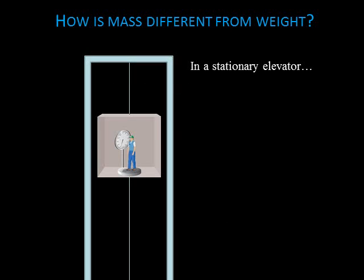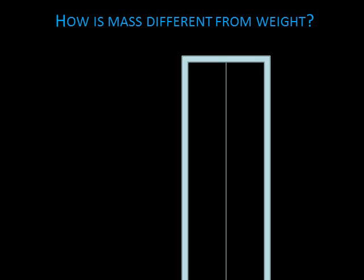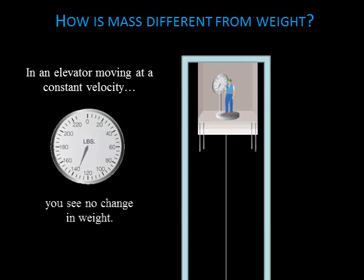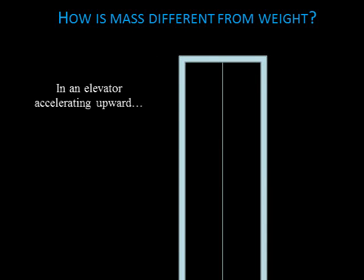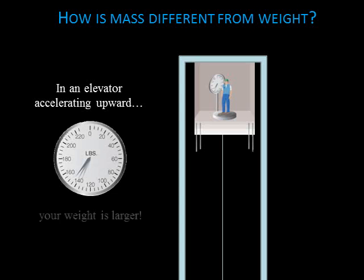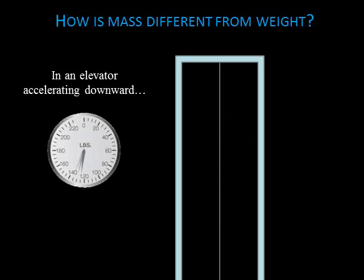To understand the difference between mass and weight, imagine standing on a scale in an elevator. Your mass will be the same no matter how the elevator moves, but your weight can vary. When the elevator is stationary or moving at constant velocity, the scale reads your normal weight. If an elevator accelerates upward, the floor exerts a greater force than it does when you are at rest. You feel heavier, and the scale verifies your greater weight. If the elevator accelerates downward, the floor and the scale exert a weaker force on you, so the scale registers less weight.